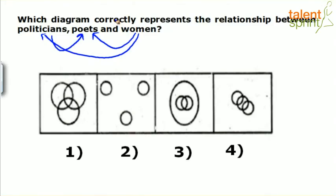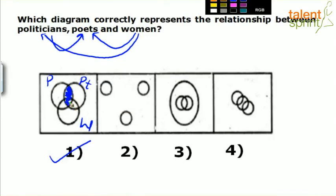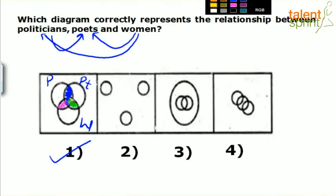All three will also overlap — a woman can be a politician and a poet at the same time. So the correct diagram showing the relationship between all three is option 1 — three overlapping circles where politicians, poets and women all intersect with each other. Poets who are politicians, poets who are women, women who are politicians, and those who are all three are all shown in figure 1.